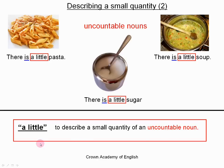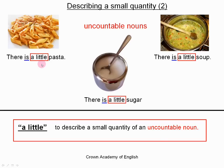So the rule is: we only use 'a little' to describe a small quantity of an uncountable noun. We do not use 'a little' with a countable noun. Also important: when we say 'a little,' we are not talking about the size — we are not talking about the size of the pasta, for example. We are talking about the quantity, the small quantity. Because 'little' is also an adjective, but here we are using 'a little' to describe a small quantity of an uncountable noun.